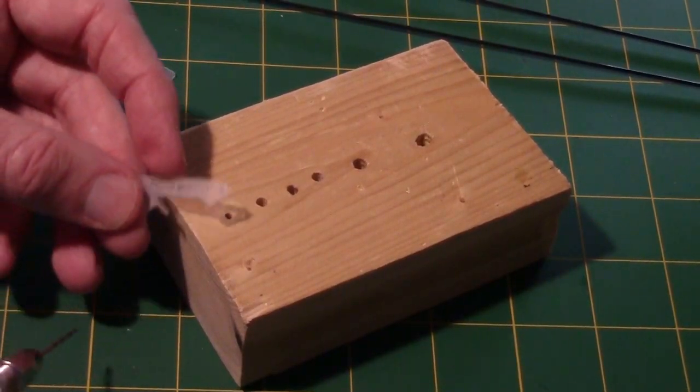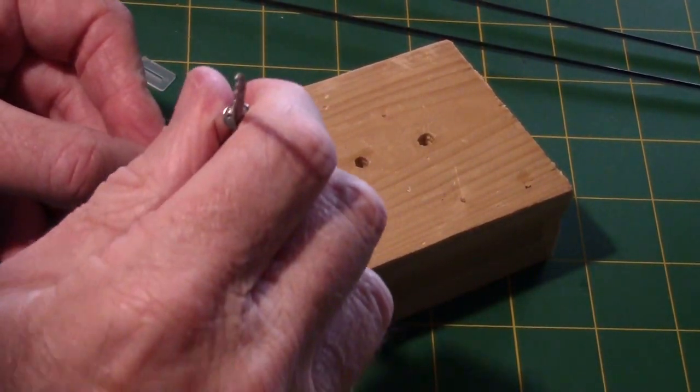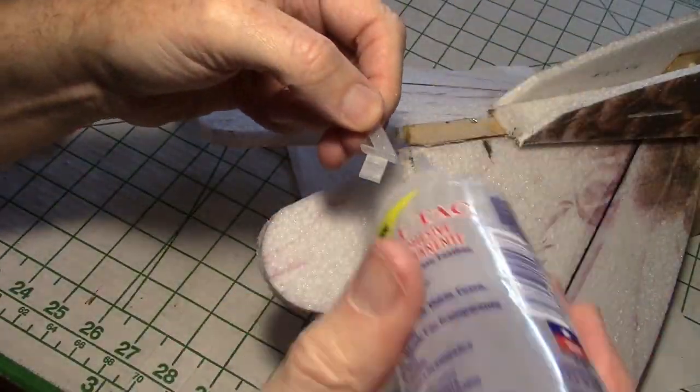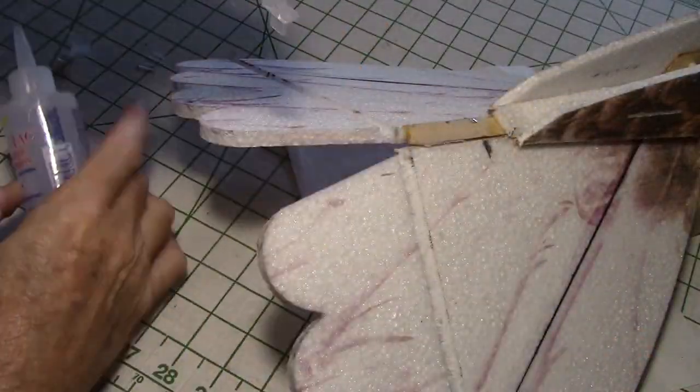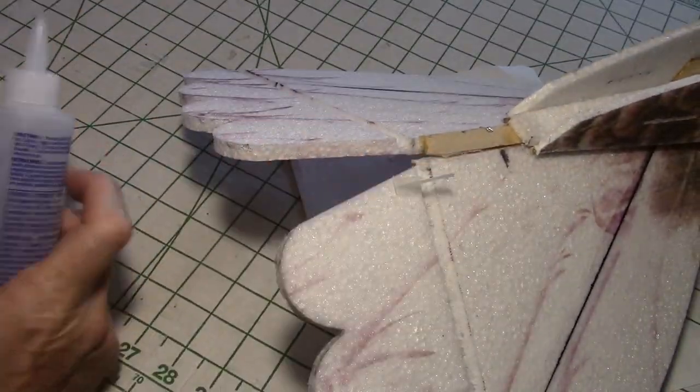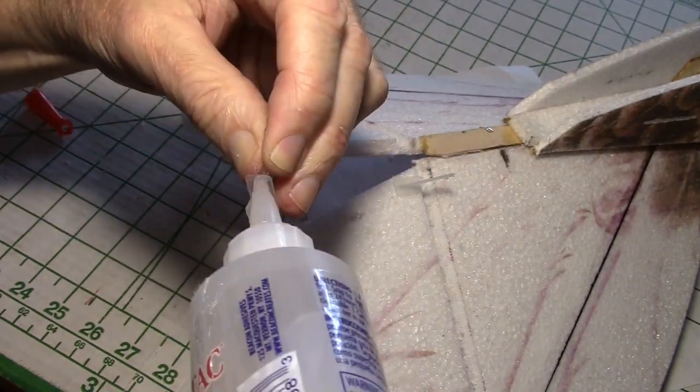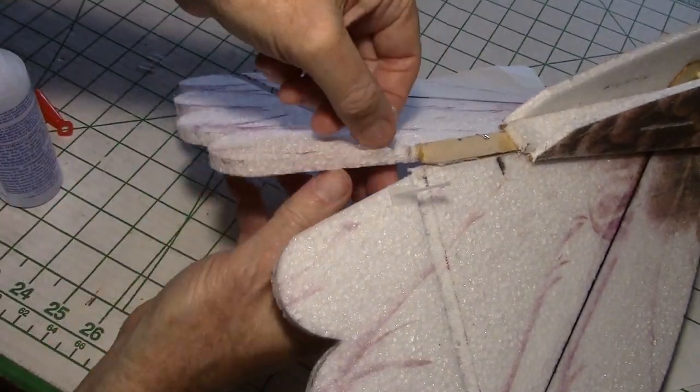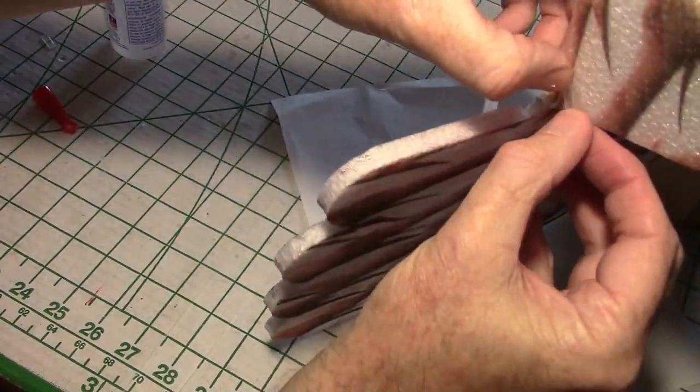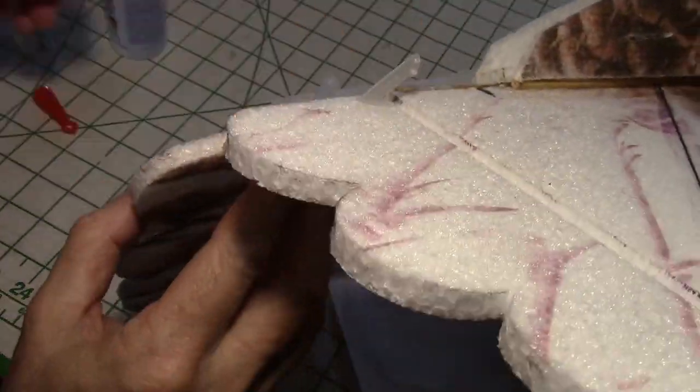Next I drilled out the control horns for the V-tail to accept the clevises. Then using some foam tack I glued the control horns onto the V-tail control surfaces. Then I placed the plates on the other side to retain the control horns against the foam.